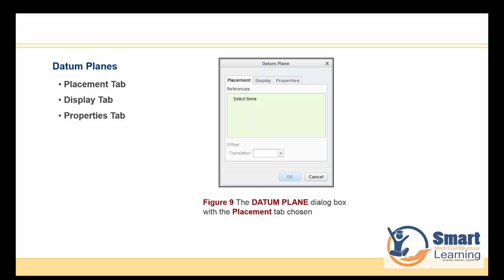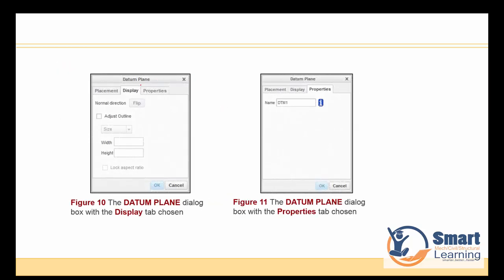We'll also look at how to select and define placement of new datum planes, how to configure your display, and how to configure your properties. The Properties dialog allows you to rename datum planes — for example, the default names Front, Top, and Right can be changed to reflect why you created a particular plane.